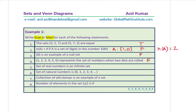Fifth: the set of real numbers is an infinite set — that is true. Sixth: the set of natural numbers is {0, 1, 2, 3, 4, …} — that is false. The set of natural numbers does not include 0; it starts from 1. Seventh: a collection of old stamps is an example of a set. This is not a properly defined set — we haven't defined what 'old' means, so we cannot determine whether an element belongs to it or not. Therefore it is false.